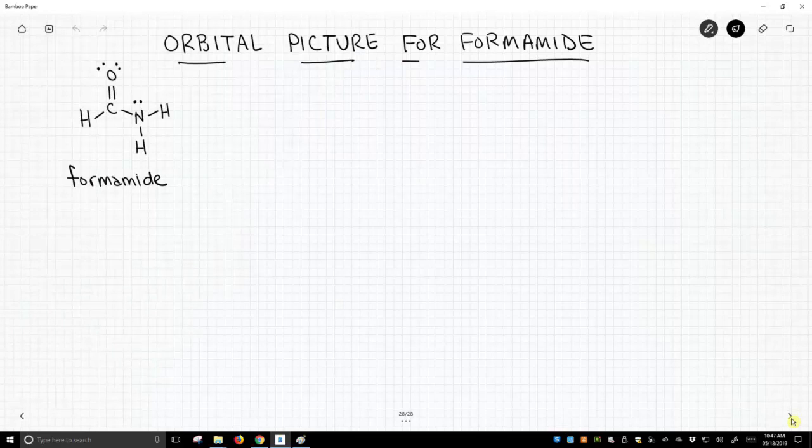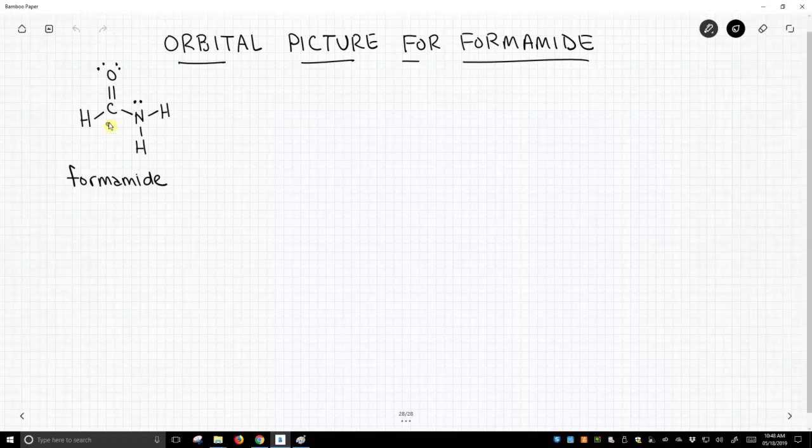Formamide has some complicating factors to it, so I'm going to work quickly through what we know about this molecule. This carbon in formamide is sp2 hybridized.